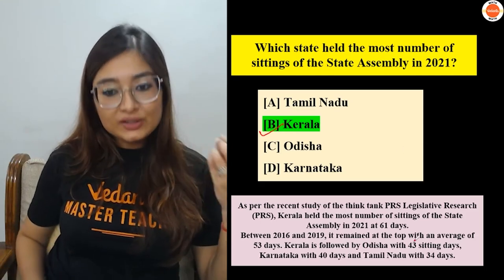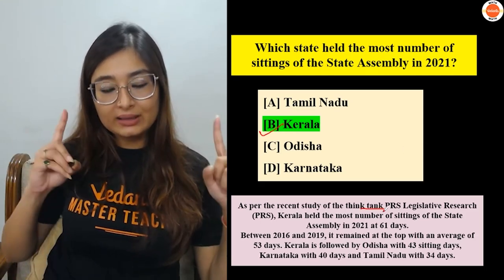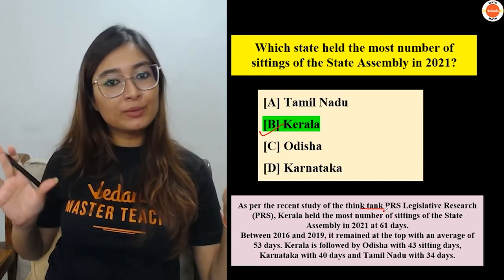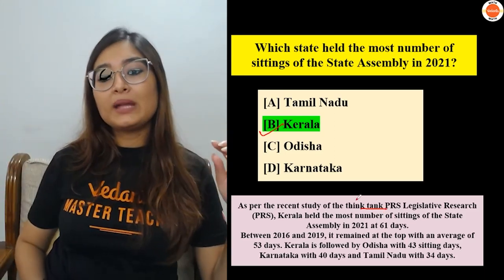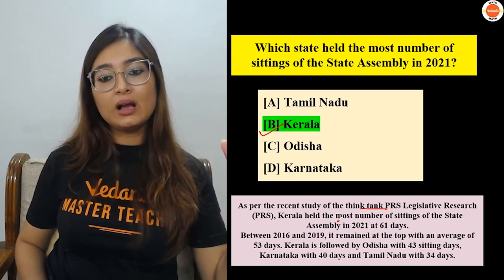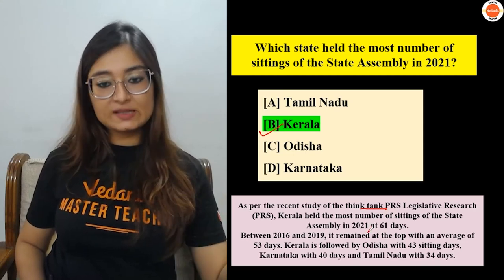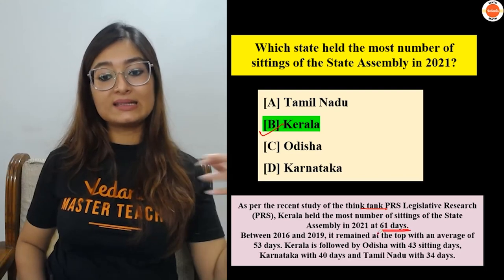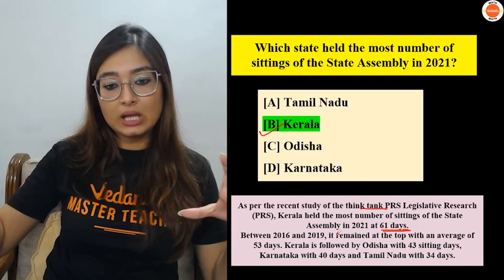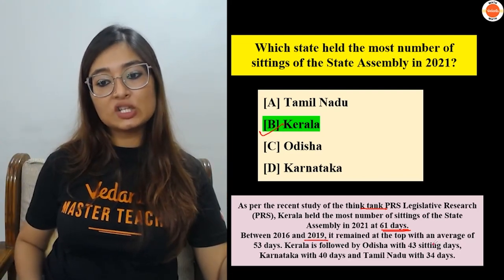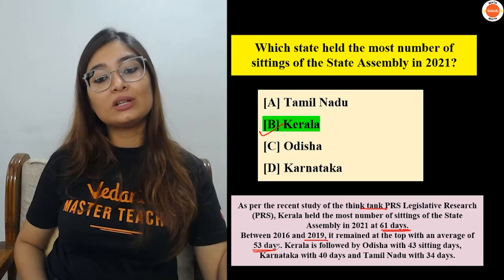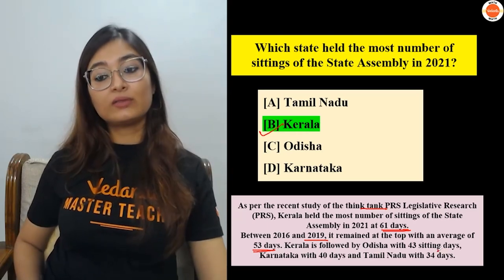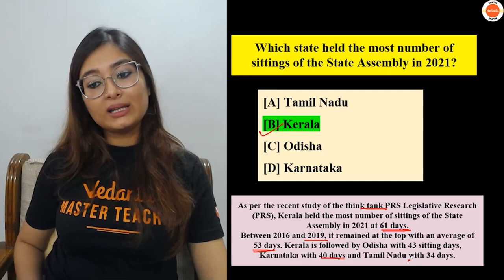So Kerala — our PRS Legislative Research, which is a think tank, studied Kerala's legislative sessions. Their work is similar to a think tank like NITI Aayog. According to their study, Kerala held sessions from 2016 to 2019 with an average of 53 days per session. It is followed by Odisha with 43 days, then Karnataka with 40 and Tamil Nadu with 34 days.